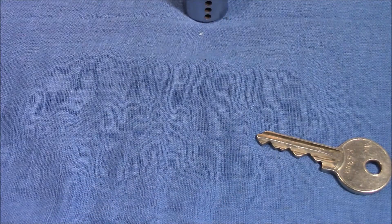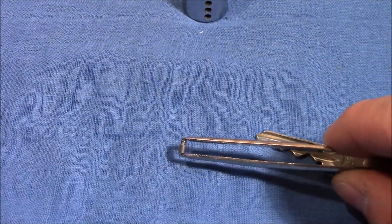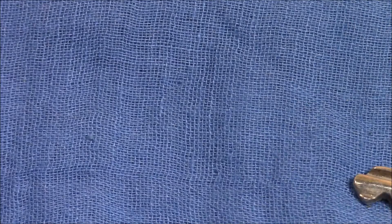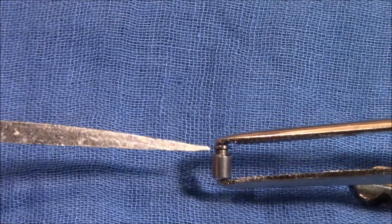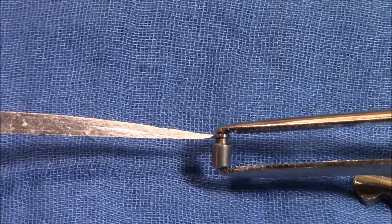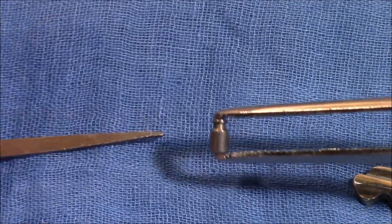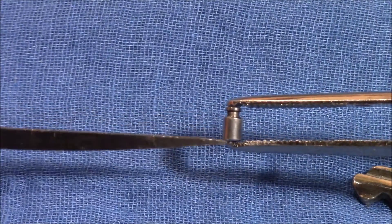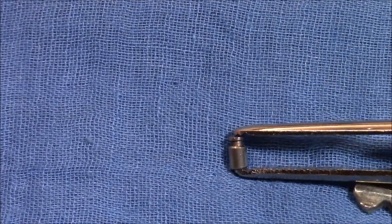And then I disassembled the lock and had a look at the pins, and here is one of those drivers. And you can see it has a very sharp end here. It's not like a normal spool, it is very thin here and actually the diameter is smaller than the normal diameter of the pin. So this explains the different picking behavior.